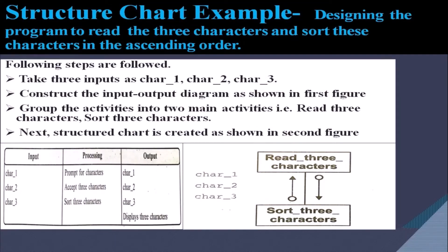To understand structure charts, let us design a program to read three characters and sort them in ascending order. The following steps are performed: take three inputs — character 1, character 2, and character 3. Then construct an input-output diagram. The figure involves input of three characters, processing — which includes prompt for characters, accept three characters, and sort three characters — and output, which involves display of three characters.